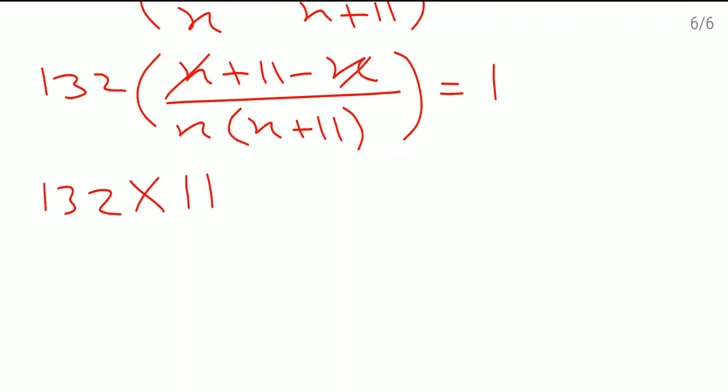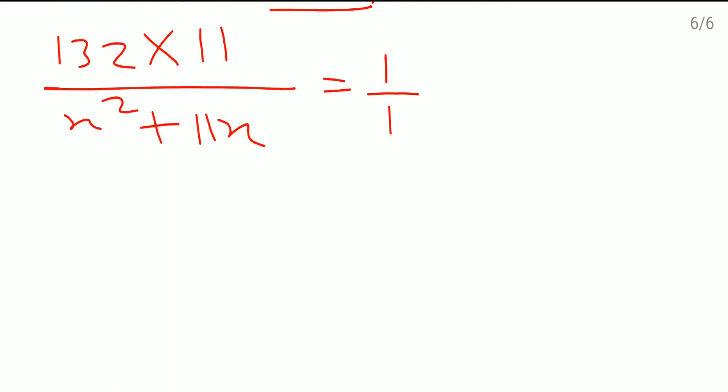132 into 11, multiplication of x and x plus 11 is x square plus 11x which is equal to 1. I can write down 1 by 1 also, and we will do the cross multiplication. So it will come as 132 into 11, which is 1452, equal to x square plus 11x.